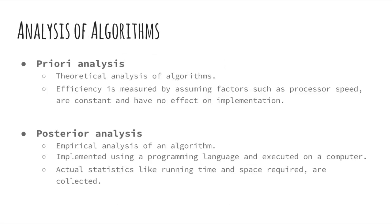So now let us look at analyzing algorithms. The efficiency of an algorithm can be analyzed at two different stages, before implementation and after implementation. A priori analysis is a theoretical analysis of an algorithm, so before implementation. Efficiency of an algorithm is measured by assuming that all other factors, like the processor speed, are constant and have no effect on the implementation.